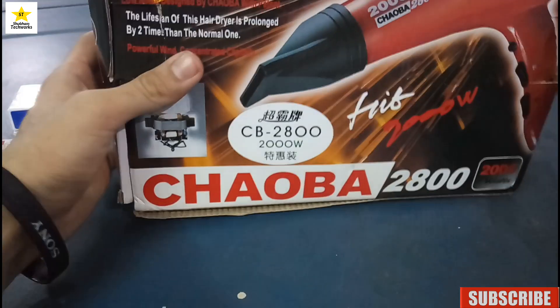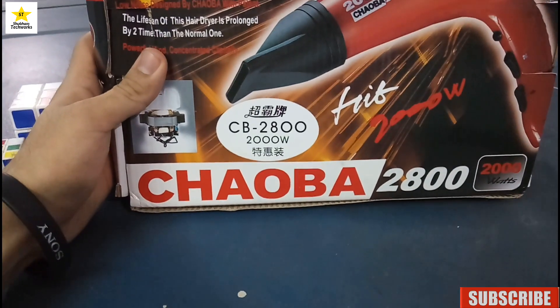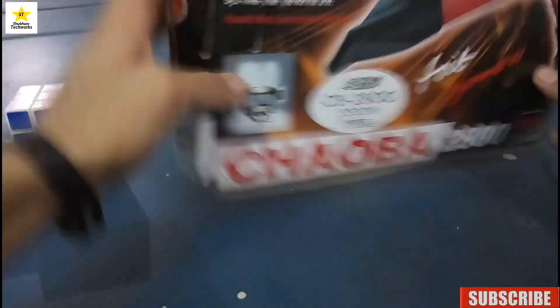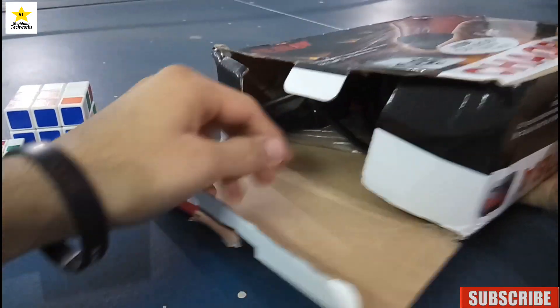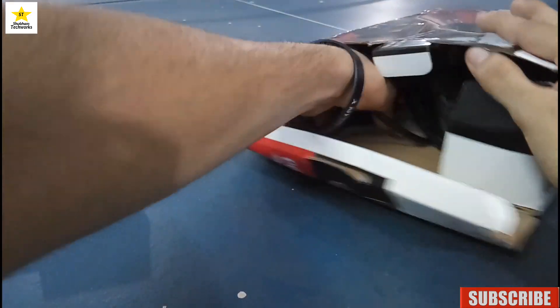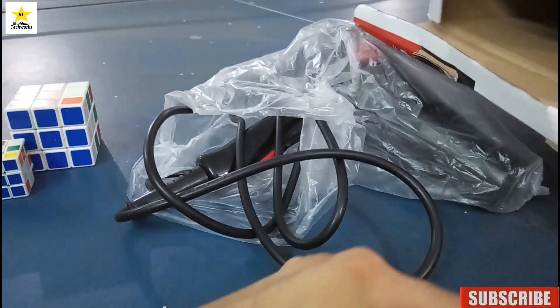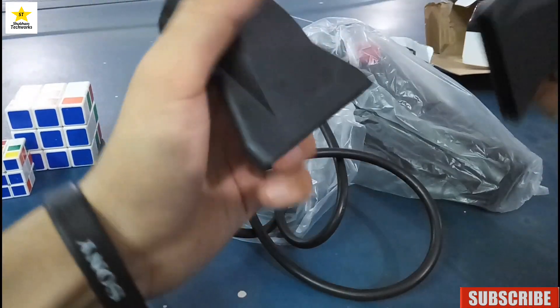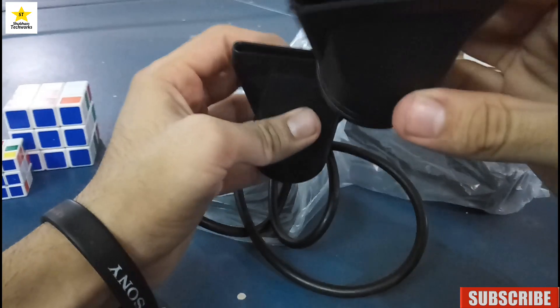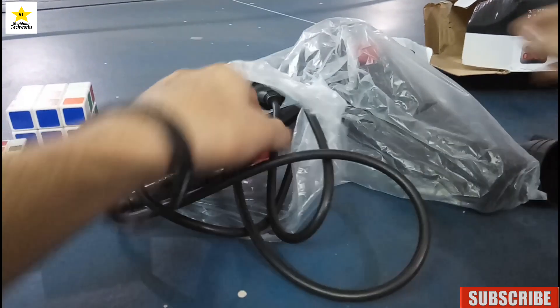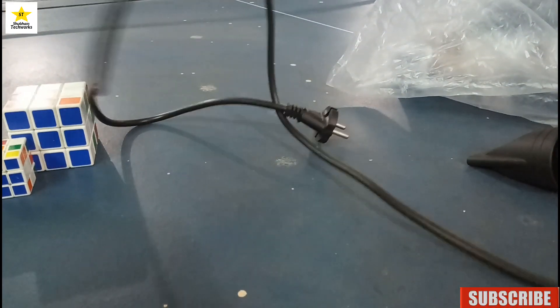So let's do this unboxing first. This is the hairdryer. These are two attachments. This one is a little bit wider. This hairdryer has almost 1.5 meters length of wire.